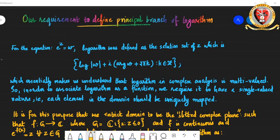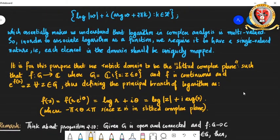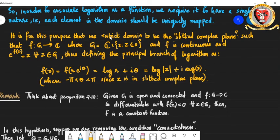This essentially makes us understand that the logarithm defined in complex analysis is multivalued, because it has a lot of elements inside the set. In order to associate logarithm as a function, we highly require it to be single-valued, such that every element in the domain is uniquely mapped. For that purpose, we are restricting the domain of the logarithmic function to the slitted complex plane. We said that the function goes from G to ℂ, where G is the slitted complex plane — the complex plane excluding the negative real axis.